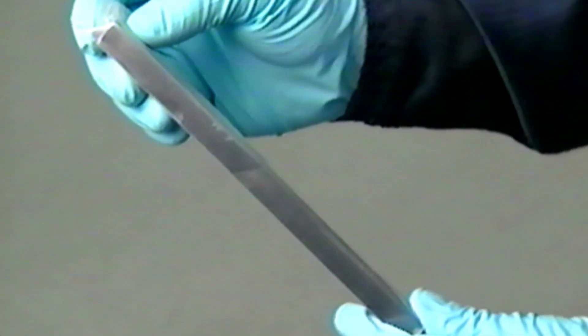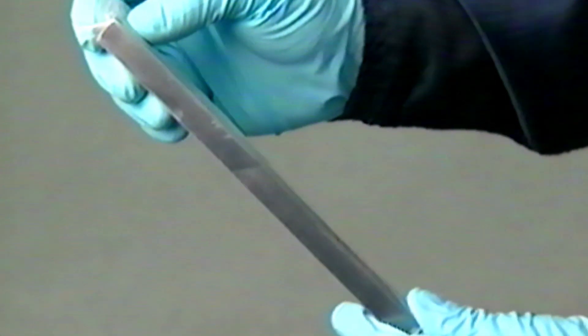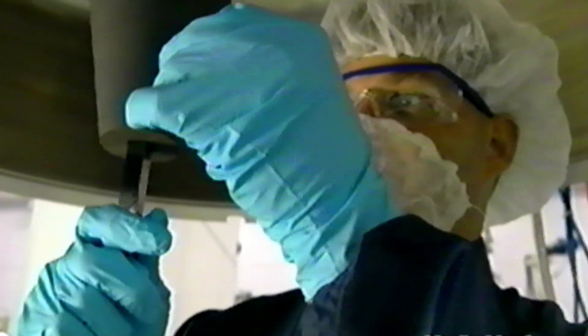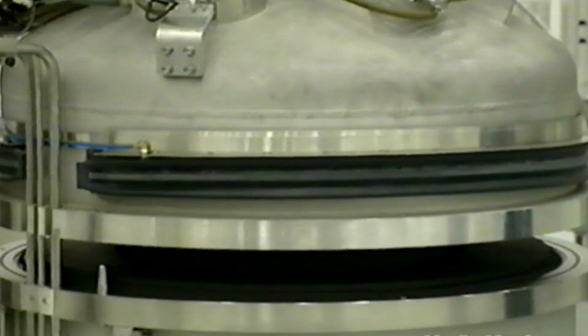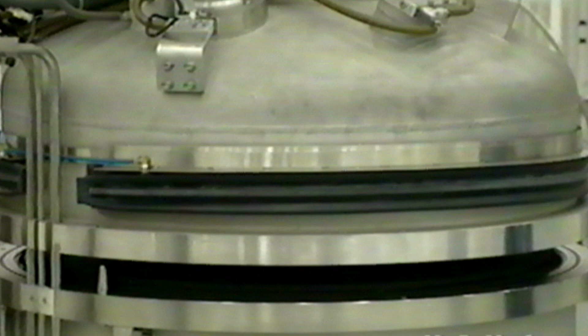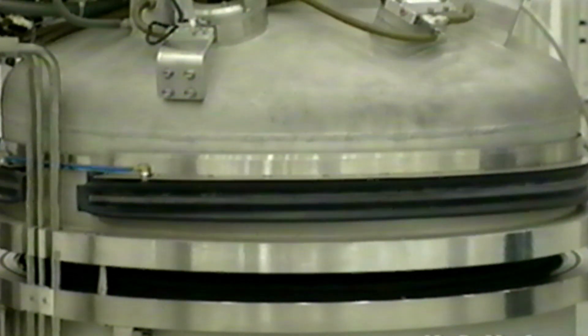After doping, a pencil-sized seed crystal of the desired orientation is inserted into the seed chuck, suspended from the upper chamber. It is from this seed that the specified crystal is grown. With charge stacking complete, the puller chamber is sealed, then purged with argon gas to remove air.